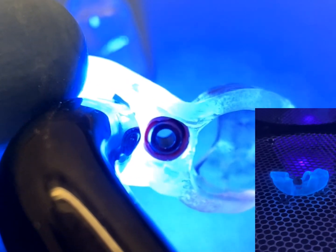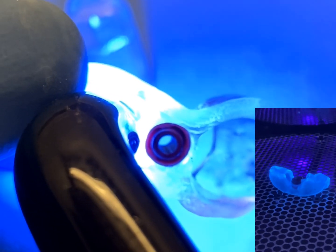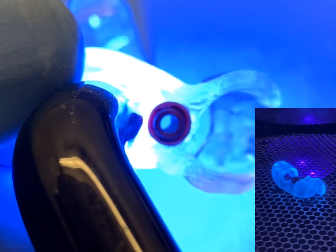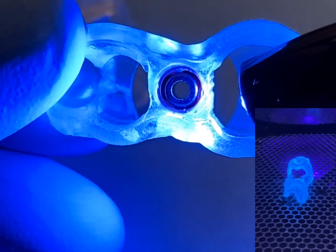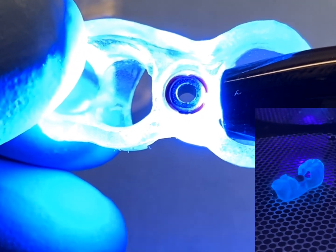Both light curable and dual cure adhesives can be used when creating a GRS surgical guide and may vary in application based on the clarity, density, and thickness of a chosen surgical guide material.